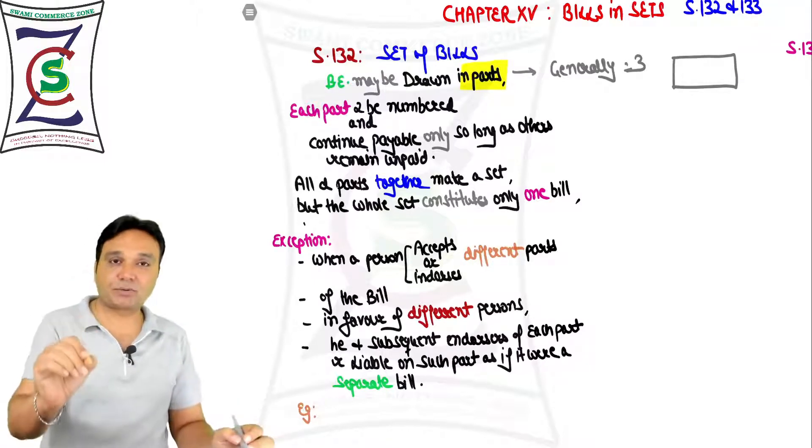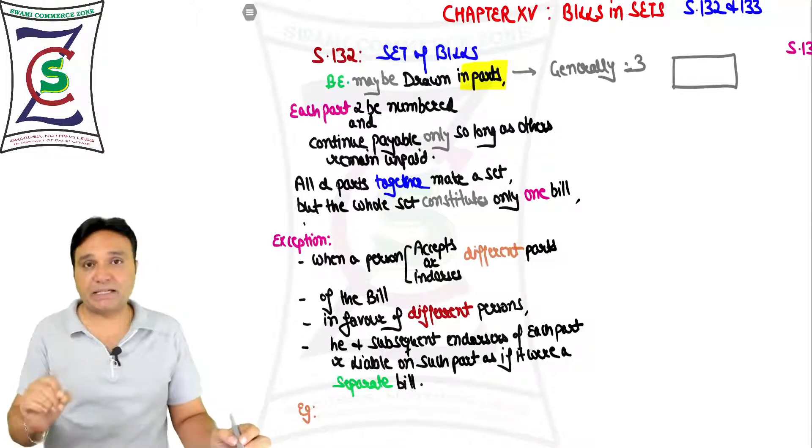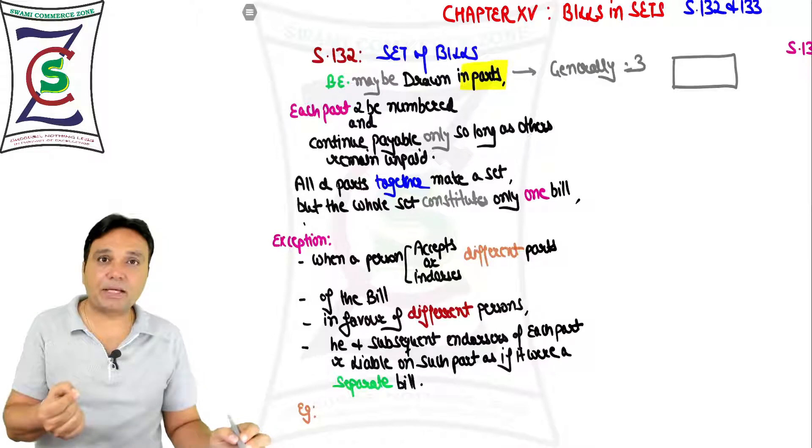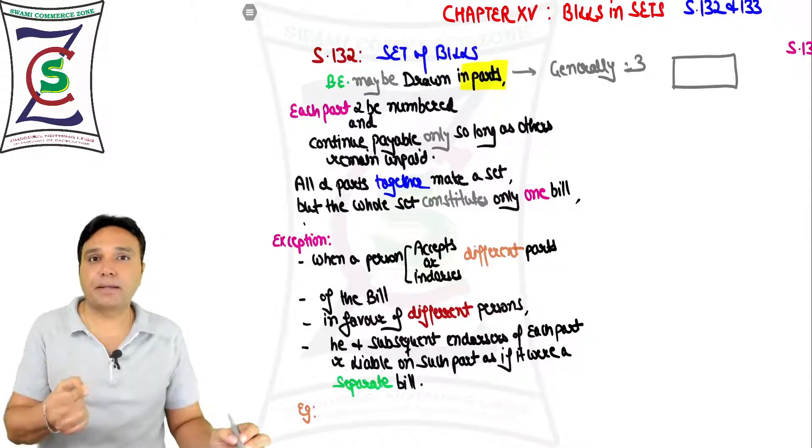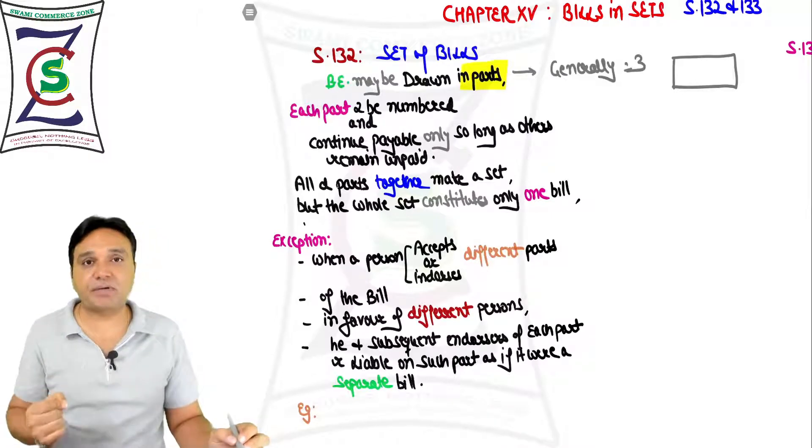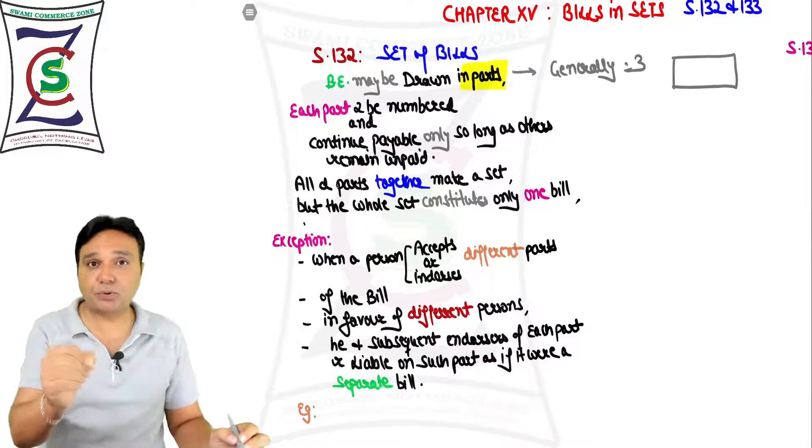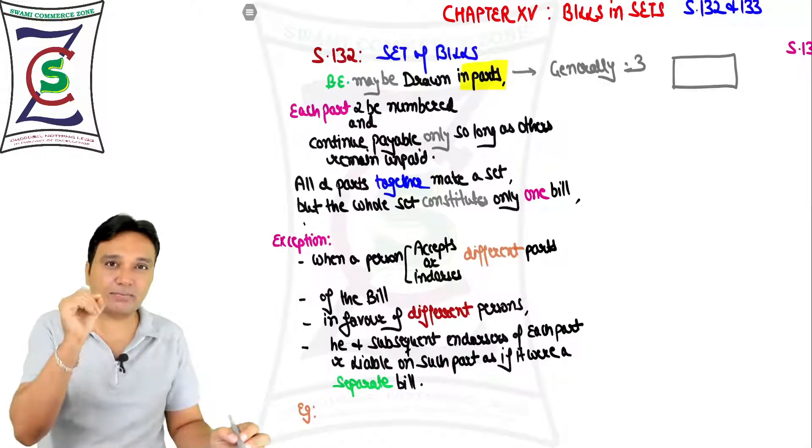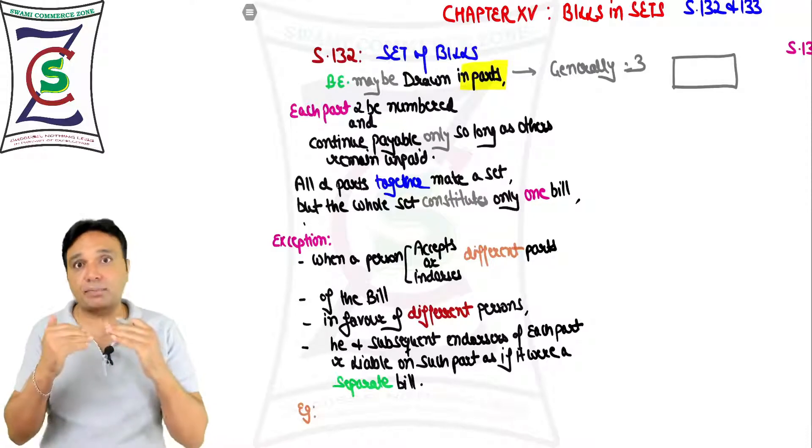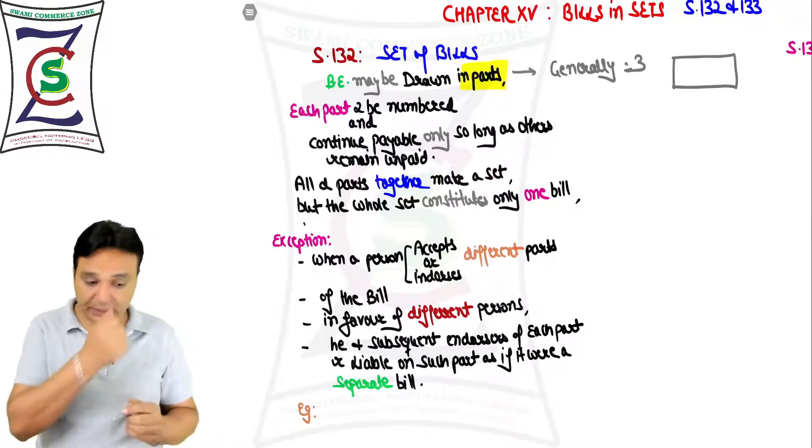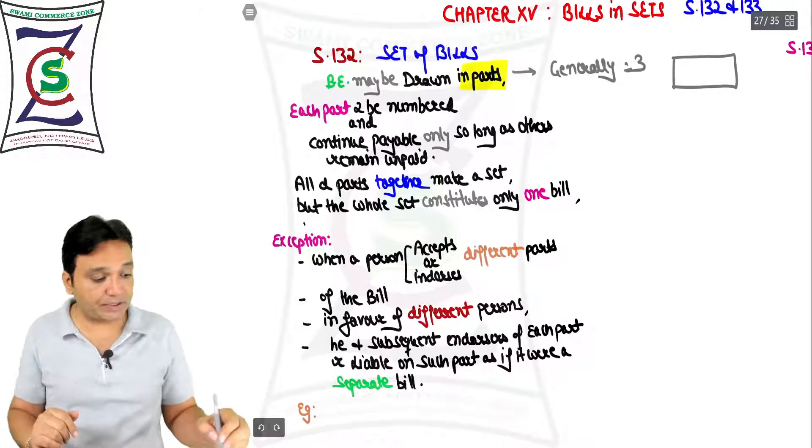There is a bill normally. We have already talked about the specimen of the bill. We mention on the top the date, the place, the stamp value, and the words: 'I order Mr. X to pay rupees 500 after three months,' signed by both the drawer and the drawee to become an acceptor.